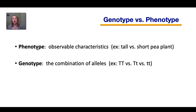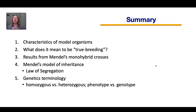We also have the terms genotype versus phenotype. Phenotype refers to the observable characteristics — appearance or function, such as the presence or absence of a disease, or tall versus short plant. Genotype is the combination of alleles, such as big T with big T, big T with little t, or little t with little t. So say I had a short pea plant: being short would be its phenotype, and being homozygous recessive — little t, little t — would be its genotype.